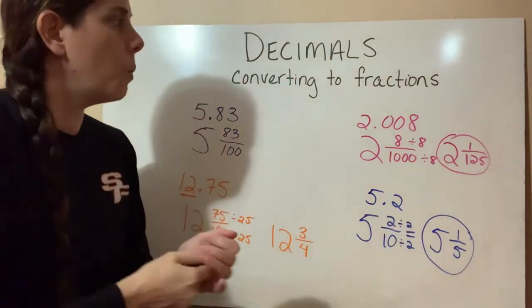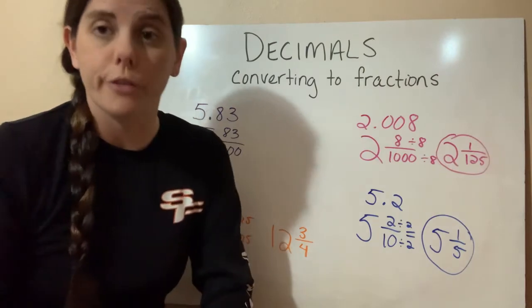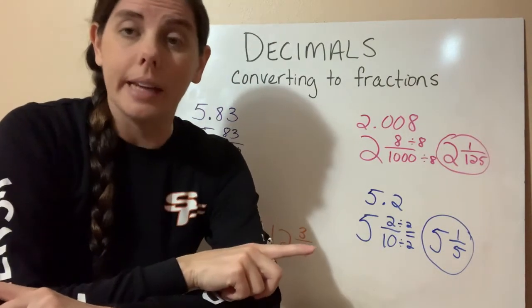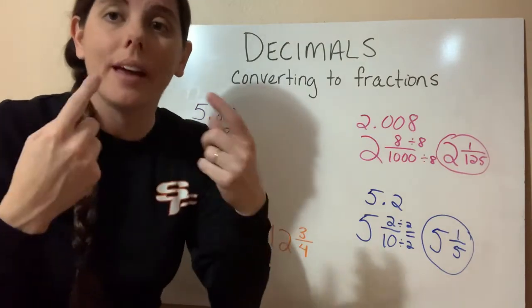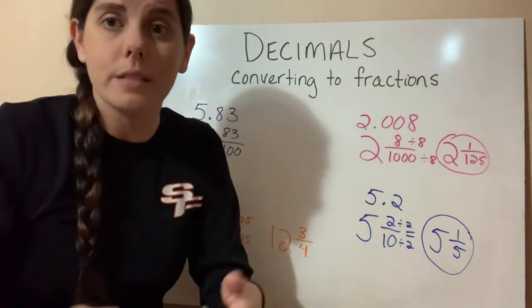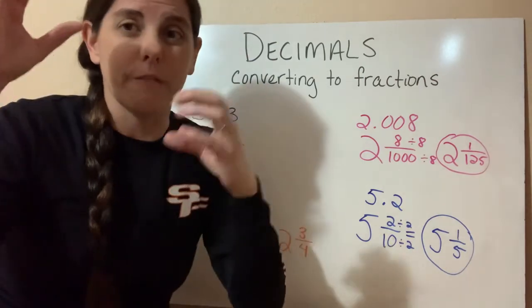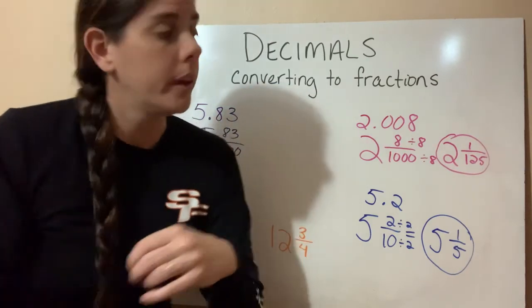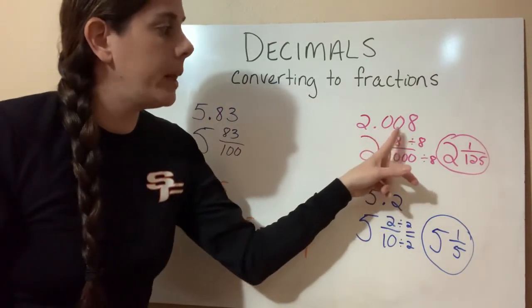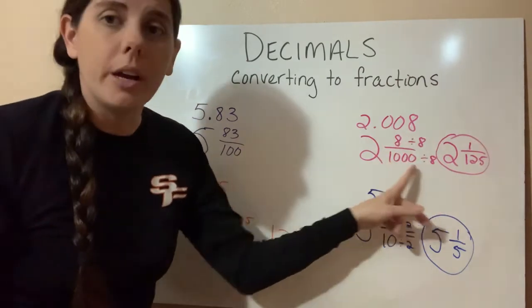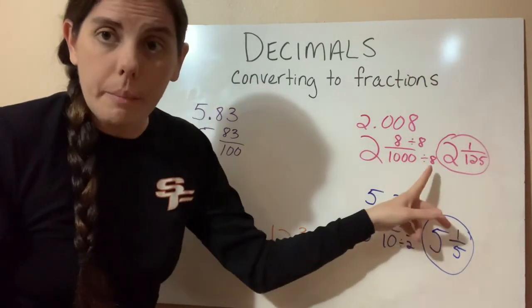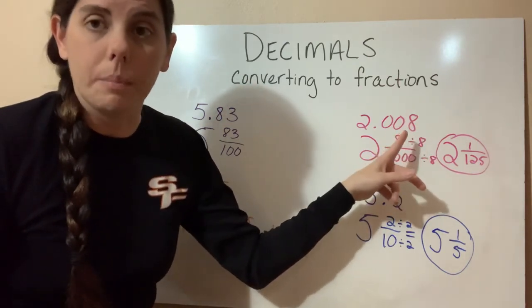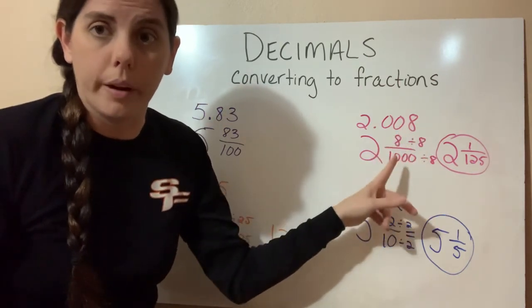So again, we want to get used to converting decimals to fractions. And we're going to learn how to go backwards later on in this chapter. But for now, using that nomenclature, using the place values of the decimals, can really help us visualize what that fraction is going to be. So just to recap, we want to look at how many decimal places we're using. And that will be our denominator, or the number on the bottom. And the actual value that's in the place value is what will be the numerator, or the number on the top.